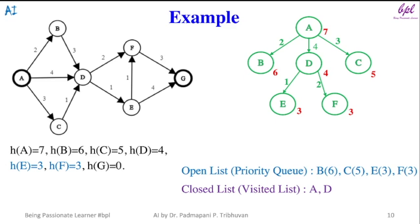In open list, node E and node F both have heuristic value 3 which is less than node B and node C's heuristic value. Alphabetical order will be followed and E will be selected.